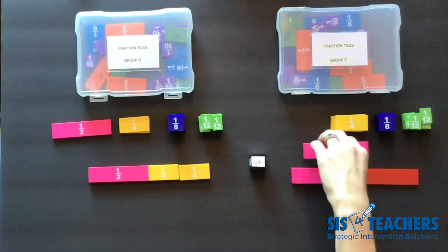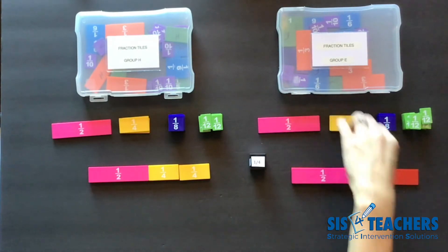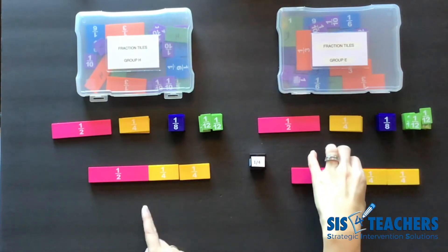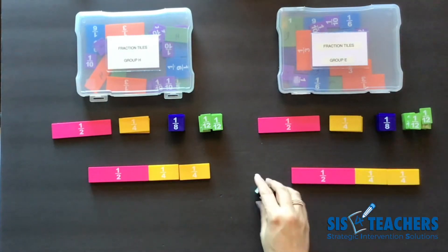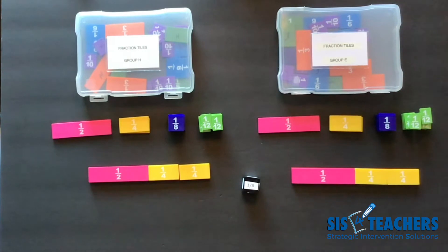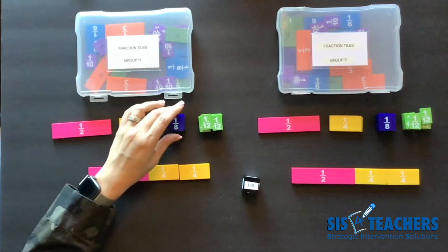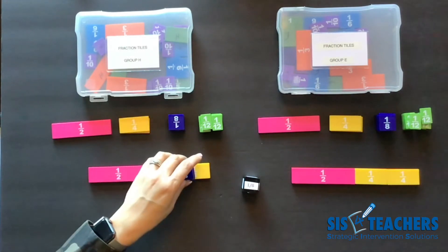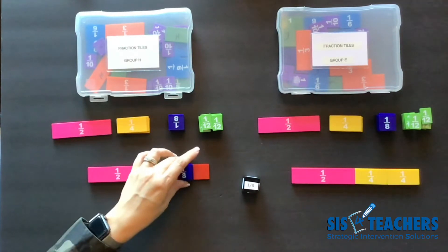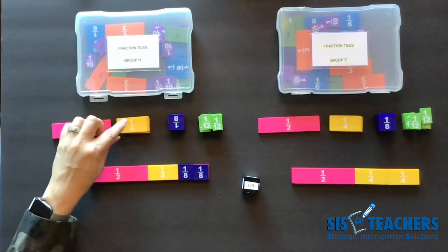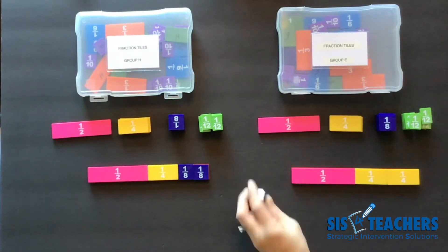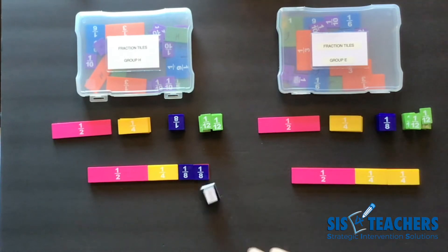My partner rolled a fourth and is going to change out her half for two fourths. Now if we roll a fourth or a half I'm going to be in luck. Unfortunately I rolled an eighth. So I might have to think about if I want to exchange a piece or if I want to pass. In this case I know that two eighths is equal to one fourth so I'm going to go ahead and exchange that out. I can't pull anything off in this case.